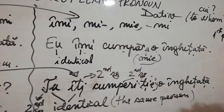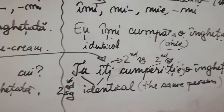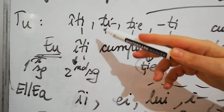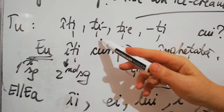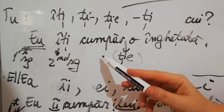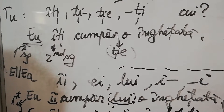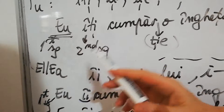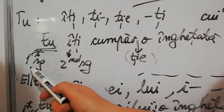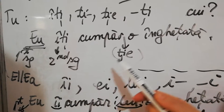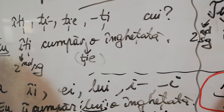For the second person, the same thing happens. The personal pronoun in dative is 'ți', 'îți', 'ție'. 'Eu îți cumpăr ție o înghețată' - I buy an ice cream to you. Here 'eu' and 'ți' are different people: first person singular and second person singular, so they are not identical. 'Ție' is not mandatory.